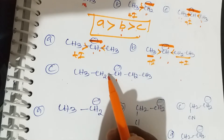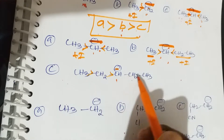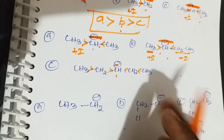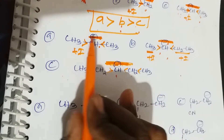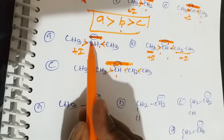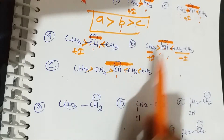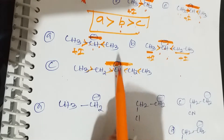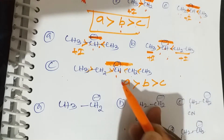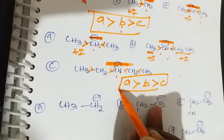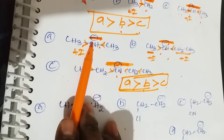The third compound C has two ethyl groups attached to the carbanion carbon — both are electron-releasing groups. So compared to compound B, C has even more negative charge on carbon. Out of these three, A has the least negative charge, B has less than C. So the stability order is A > B > C.